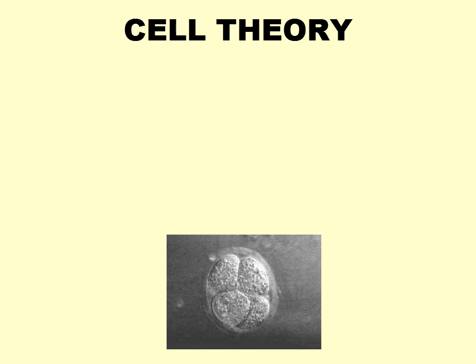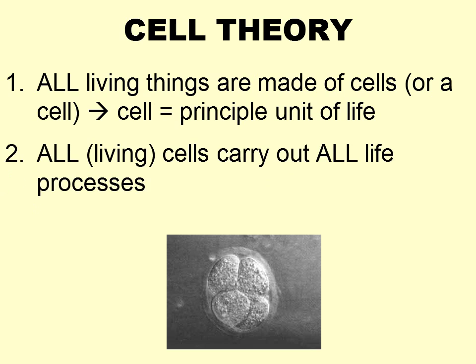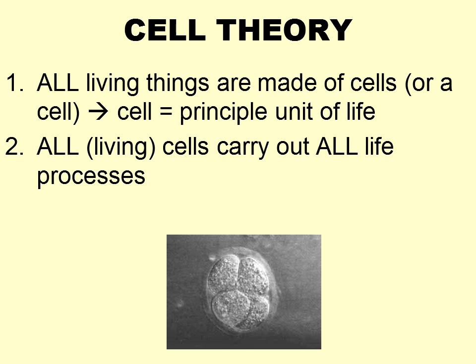What we do is we take all of those understandings of cells and put them together into these three central tenets of what we call cell theory. Don't get thrown off by that term theory — we're not talking about the usage of the word where we're not sure. These are the things that we are sure of about cells, given the state of research to this day. The first thing is that the cell is the principal unit of life, that all living things are made out of at least one cell, or more than one cell.